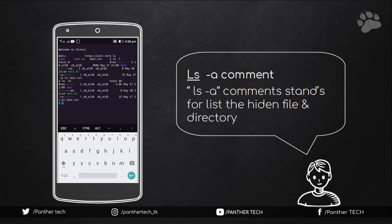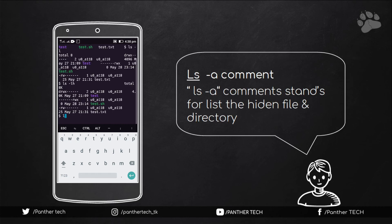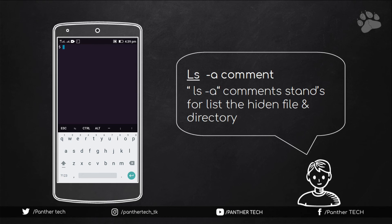The third parameter is ls -a. This parameter is used to see hidden directories and files. Hit enter, and as you can see, entries starting with a dot — such as . and .. — are hidden directories.